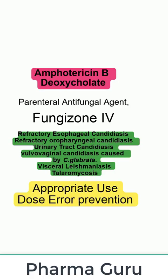Boxed warning. Appropriate use: Amphotericin B should be used primarily for the treatment of patients with progressive and potentially life-threatening fungal infections. It should not be used to treat non-invasive forms of fungal disease. Erroneous dose prevention.